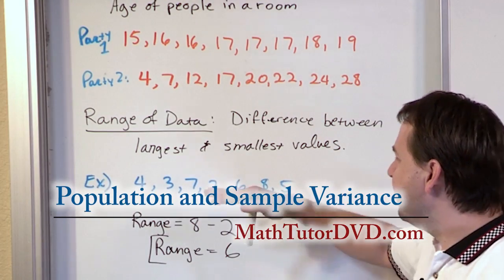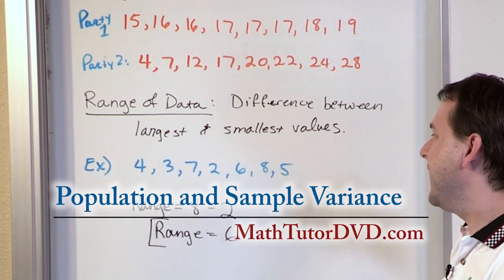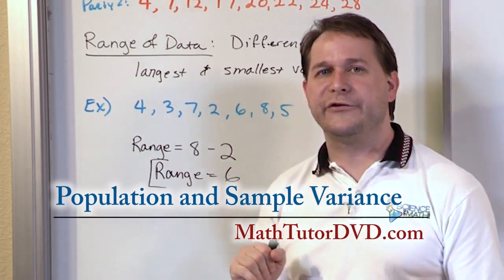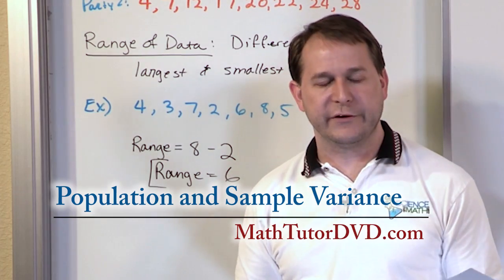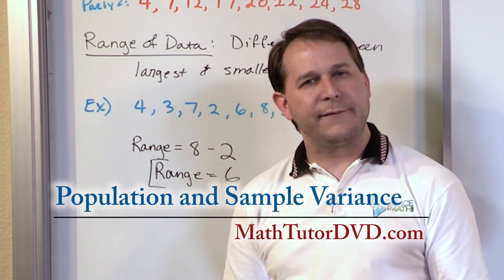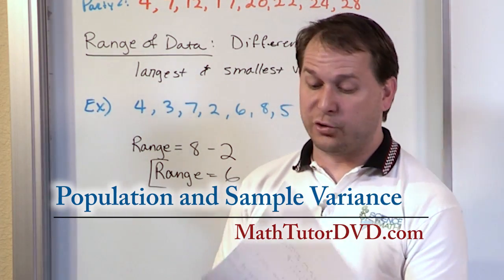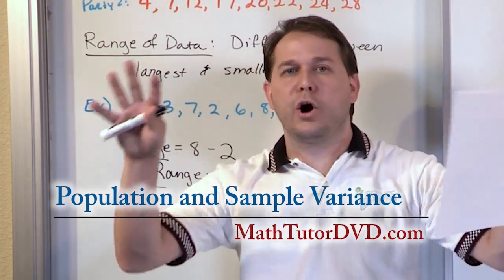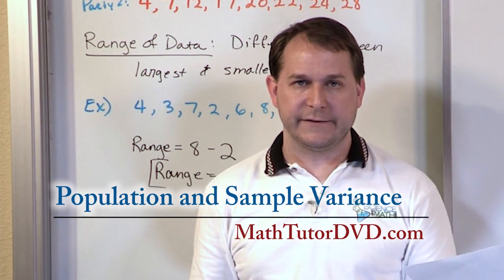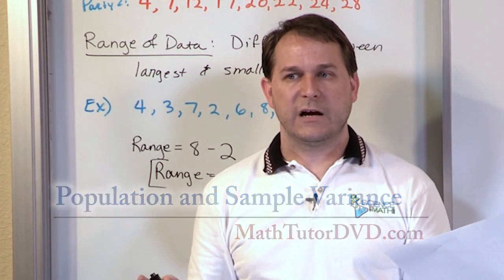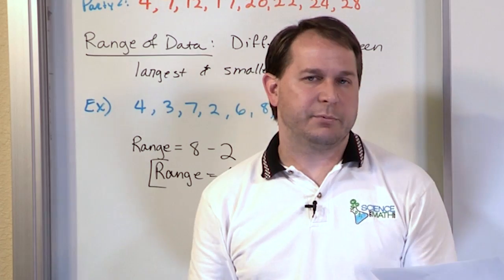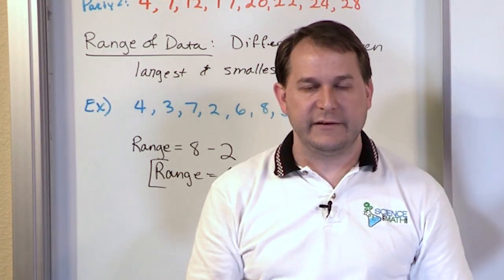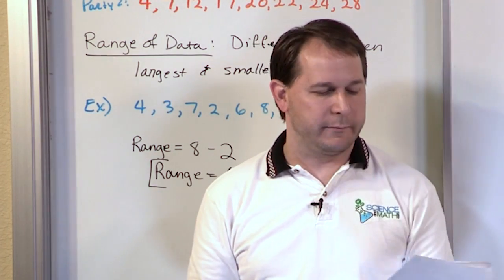This is the range, and it's very easy to calculate. Unfortunately, if I have outliers in my data, it makes the range almost useless. So we have to go back to our original question: how can we measure how spread apart our data is without being susceptible to the outlier problem, or at least reduce our sensitivity to it?